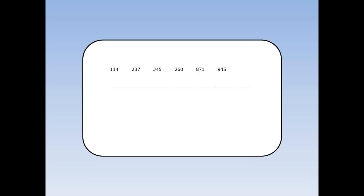To find the mean of these six numbers, first of all, add up all the numbers. They add up to 2774. Then we divide that by 6, because there are six numbers. 2774 divided by 6 is 462. 462 is the mean.